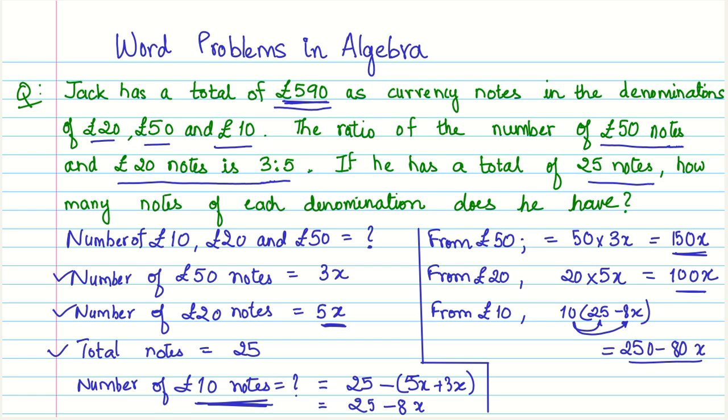Let us formulate the equation. We have 150x plus 100x plus 250 minus 80x, and this all totals to £590. When we simplify this further, we have 100x minus 80x. 100 minus 80 is 20, and 150 plus 20x is 170x plus 250 equals 590. So this gives us our equation simplified, which we can proceed to solve further.